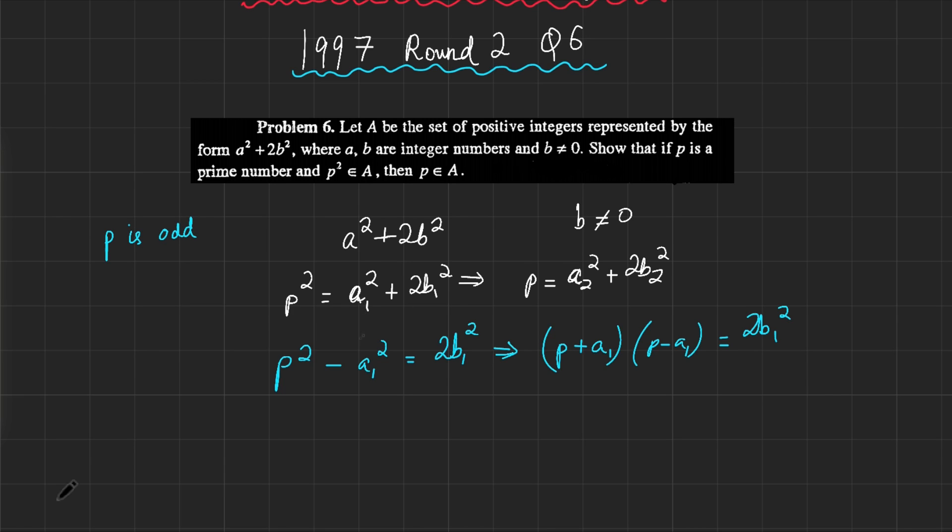We can assume that p is odd now, because all primes greater than 2 are odd. So now if we have an odd number squared, which is odd, equal to some number plus 2 times some number, so that means this is even, that forces a1 squared to be odd. That would also force a1 to be odd. So now we have p plus a1, odd plus odd, this is even. And this is also even.